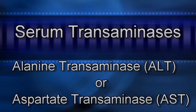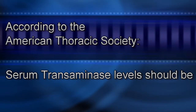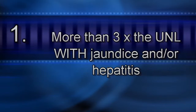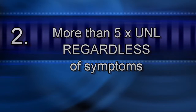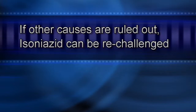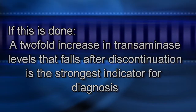So if a patient presents with all those symptoms, what is the procedure for definitive diagnosis? Diagnosis can be difficult, but it essentially relies on two deciding factors. Serum transaminase levels are used in the diagnosis. According to the American Thoracic Society, serum transaminase levels should be either more than three times the upper normal limit with jaundice and/or hepatitis symptoms, or more than five times the upper normal limit regardless of symptoms. If other causes of elevated levels are ruled out, isoniazid can be re-challenged. A two-fold increase in serum aminotransferase that falls after discontinuation is the strongest indication for diagnosis.